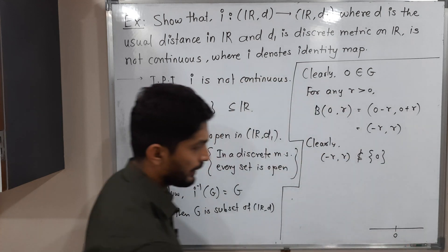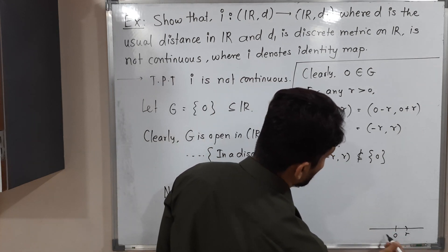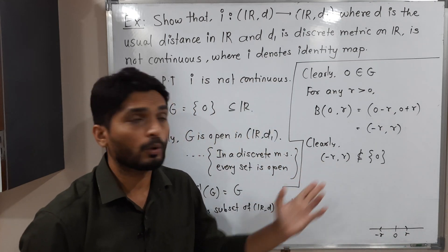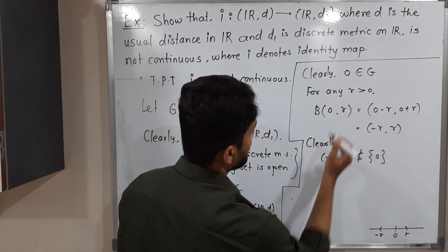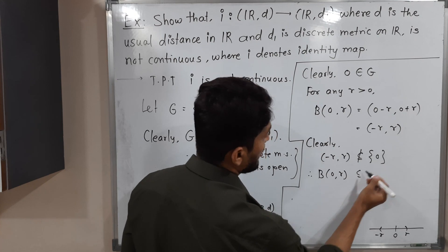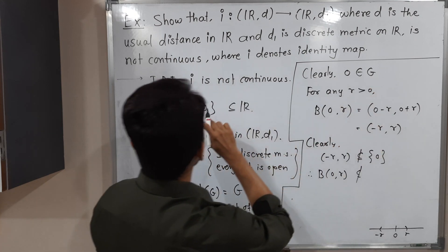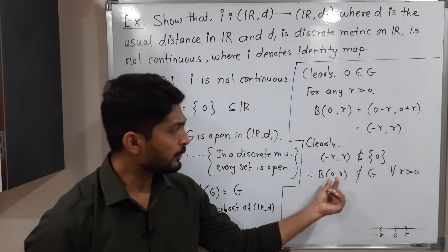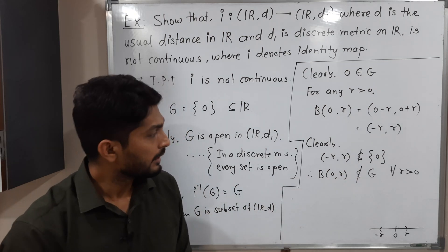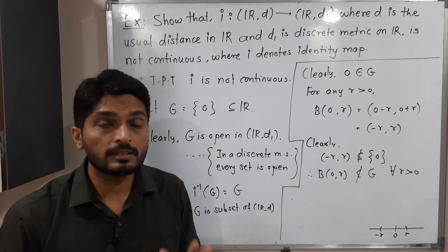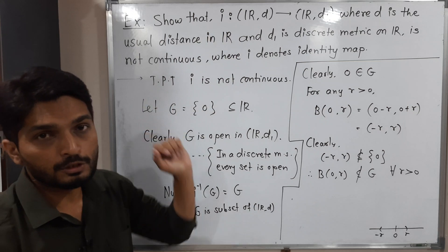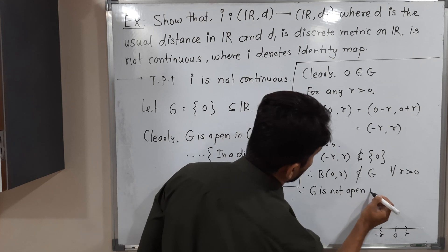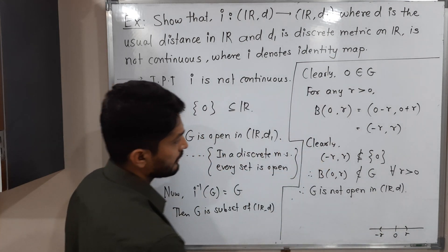Let me show this in a diagram. This is the point 0 on the real line, and (-r, +r) is the interval around it. This interval is obviously not a subset of singleton {0} since there are many points other than 0. This interval is our ball B(0, r), and singleton {0} is our set G. So the ball is not a subset of G, and this is true for every r greater than 0. Therefore, G is not open in Rd where d is the usual distance.